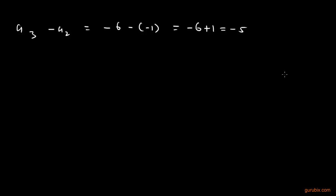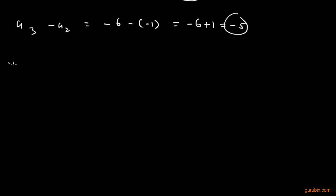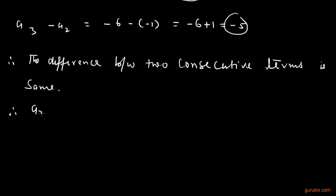What we observe? We observe that this minus 5 is same in both conditions. Since the difference between two consecutive terms is same, therefore AN forms an AP.